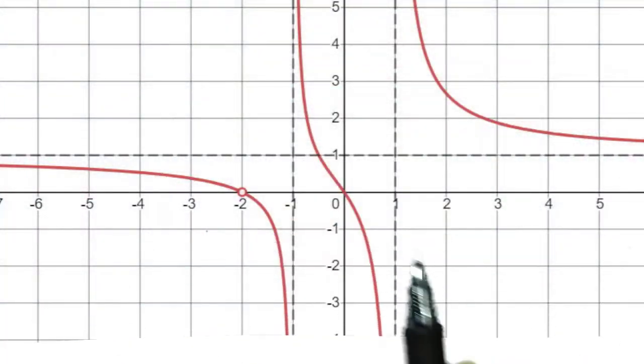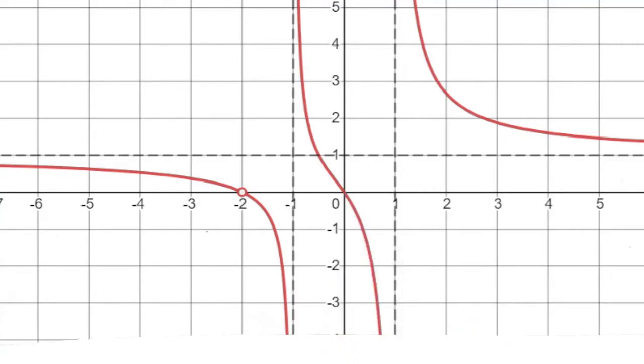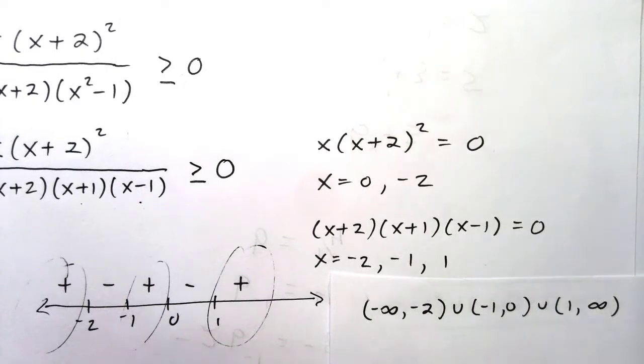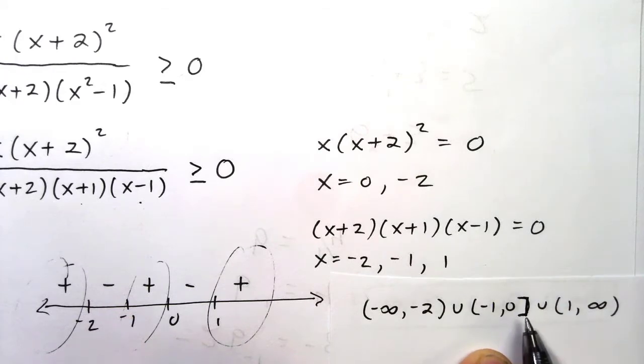What about at zero? Well at zero, if we look at the picture, here the function is equal to zero, and zero is greater than or equal to zero, and so this is included. So that is one adjustment that we need to make. We need to make this a square bracket here to indicate that zero is part of the solution.